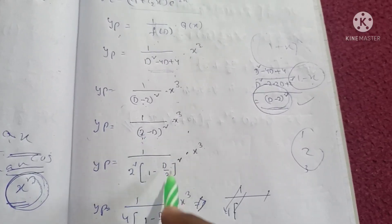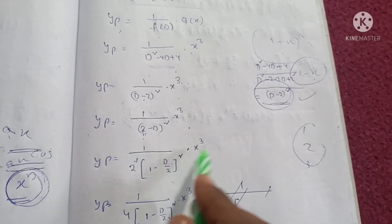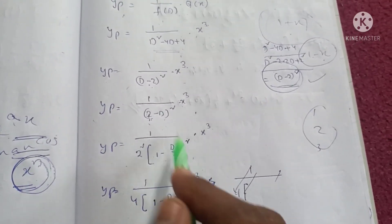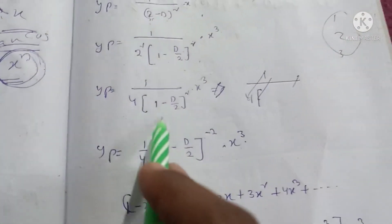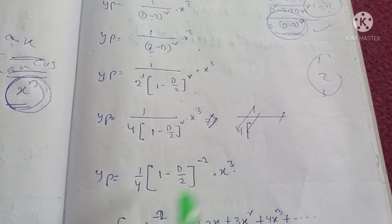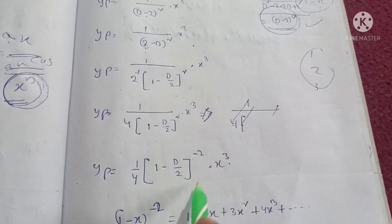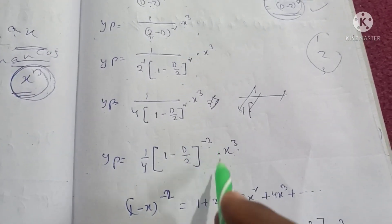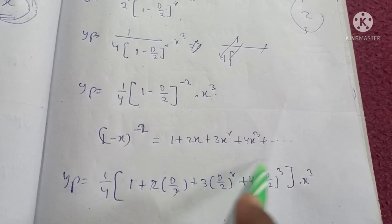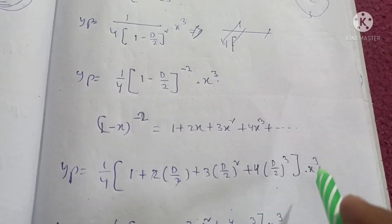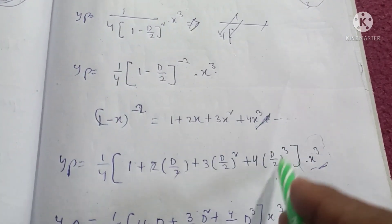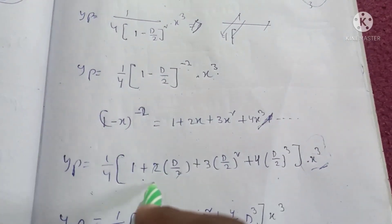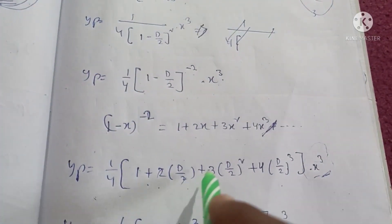Factor out 2²: yp = 1/4 · (1 - D/2)^(-2) · x³. Using the binomial expansion (1-x)^(-2) = 1 + 2x + 3x² + 4x³ + ..., we expand (1 - D/2)^(-2) and apply it to x³. So yp = 1/4 · (1 + 2·(D/2) + 3·(D/2)² + 4·(D/2)³)·x³.